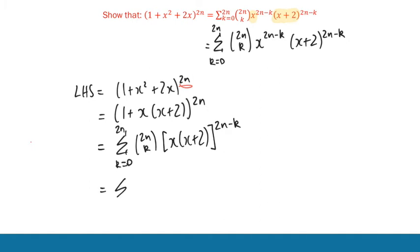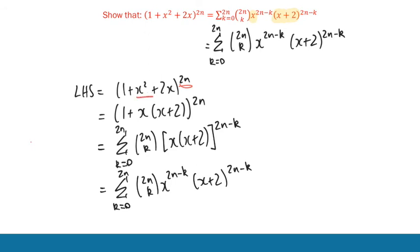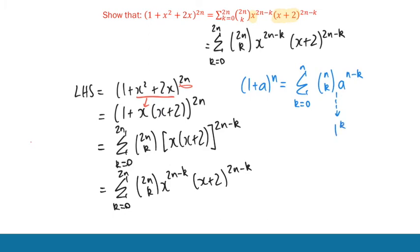All we do to match the result is expand that second bracket so the power sits on each piece individually, giving x^(2N−K) times (x + 2)^(2N−K). This isn't hugely difficult — it's just noticing to pull out the x to get that (x + 2). Once you've done that, it's just about knowing how we write the binomial expansion in sigma notation. Remember that in sigma notation, (1 + A)^N equals the sum from K = 0 to N of N·C·K times A^(N−K). There's an invisible 1^K in there, but 1 to anything is just 1, so we ignore it. That's where this expression comes from.